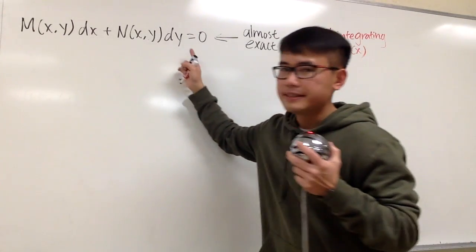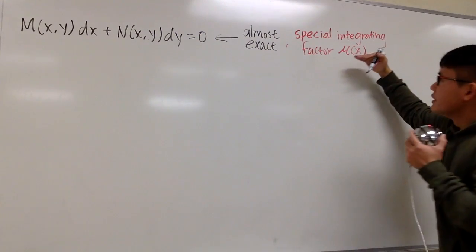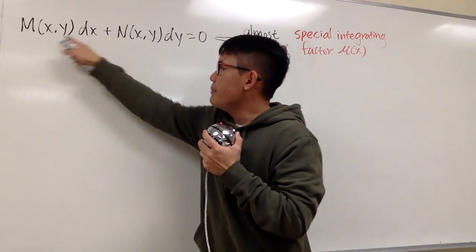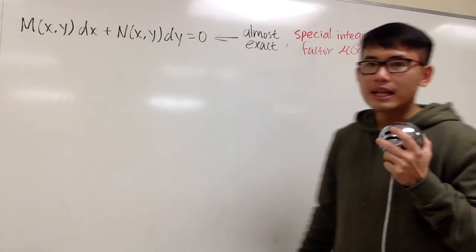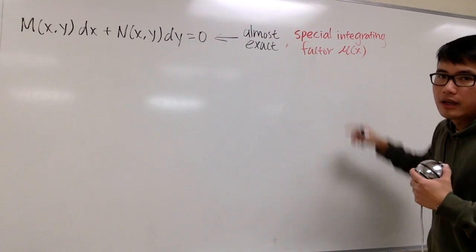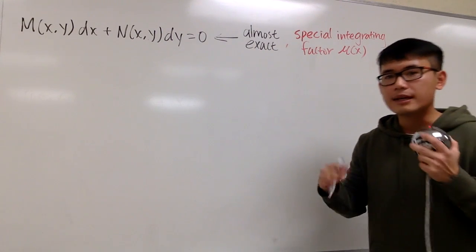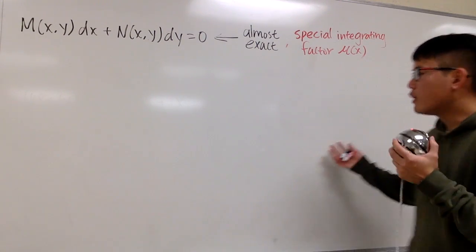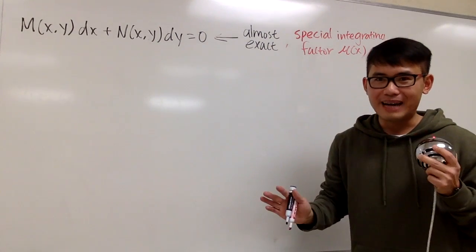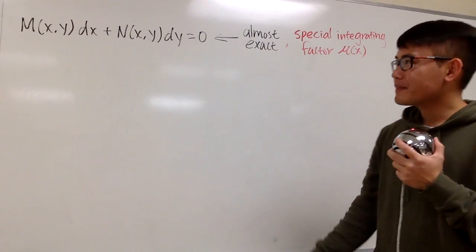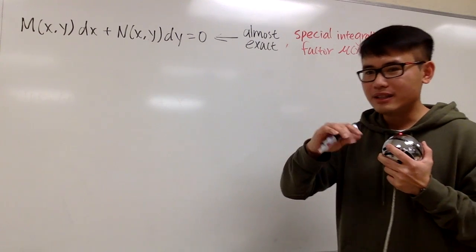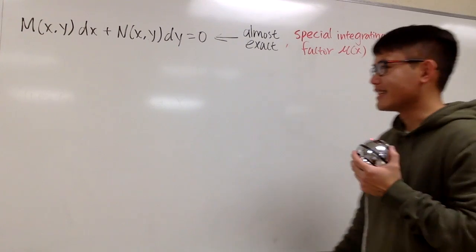Here is the idea. Assume this equation is not exact at the moment. However, after we multiply everything by this special integrating factor μ, the result will be exact. The M and N are both functions of x and y. But let's first come up with a formula for the special integrating factor in terms of just x. Later I will also show a formula for μ in terms of just y. The special integrating factor could be a function of both x and y, but we hope that doesn't happen because the computation would be really hard.